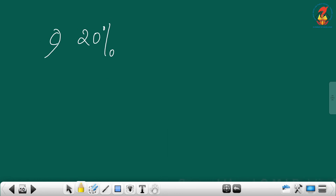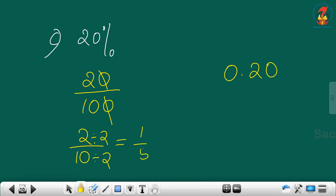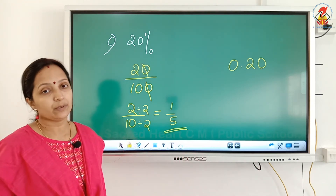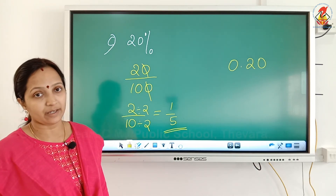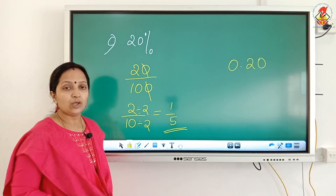Next question: 20 percent. 20 percent means 20 into 1 by 100, which is 20 by 100. The decimal part is 0.20. Find the lowest term: divide by 2 to get 2 by 10, then further to 1 by 5. If it is division by 100 you can write the decimal number directly, and then reduce the fraction to its lowest term.